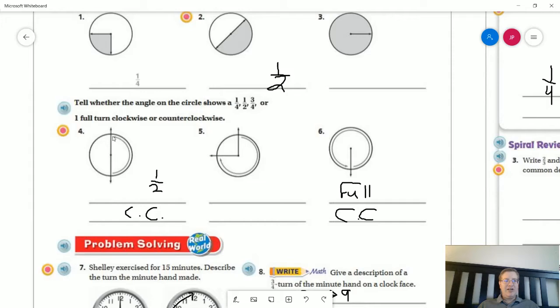We're going to follow the arrow. We're going against the direction of a clock, and we are going one half turn counterclockwise. This one, number six, we are going a full rotation counterclockwise.